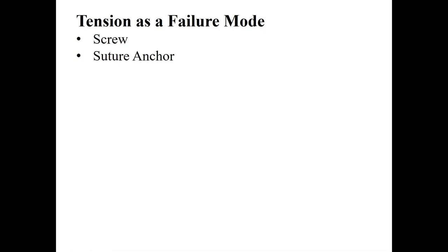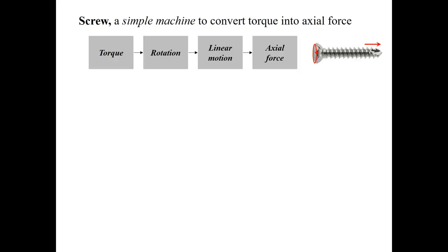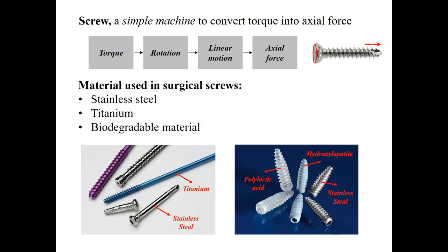This video provides an introduction to the biomechanics of surgical screws and suture anchors. A screw is a simple machine that converts torque into an axial force. A surgical screw is made of metals such as stainless steel or titanium, or a biodegradable material.